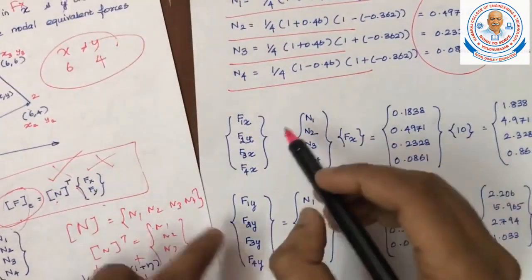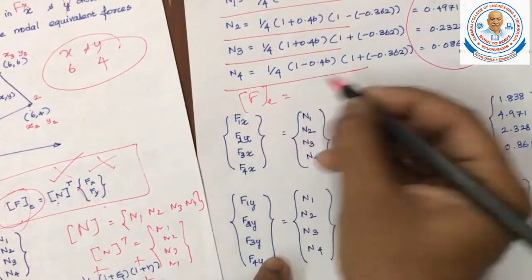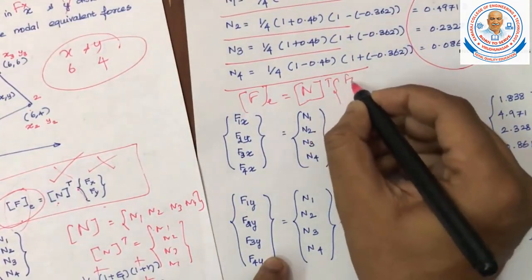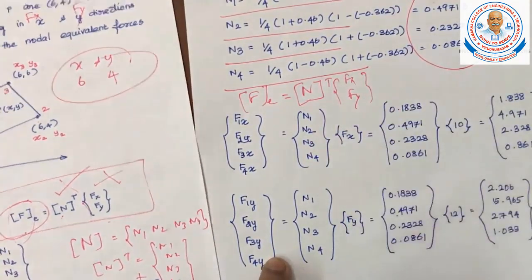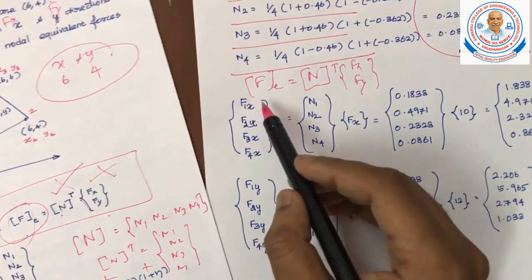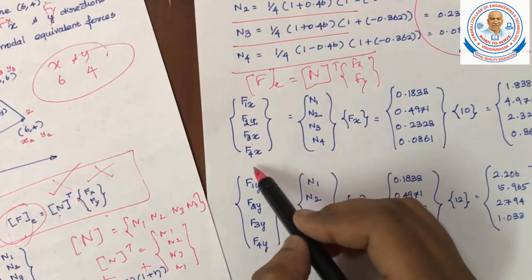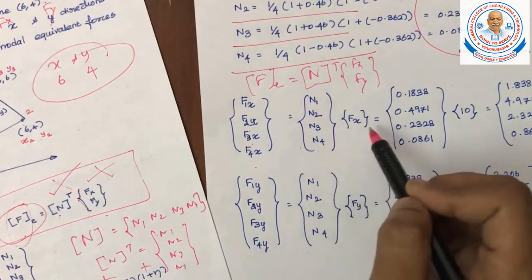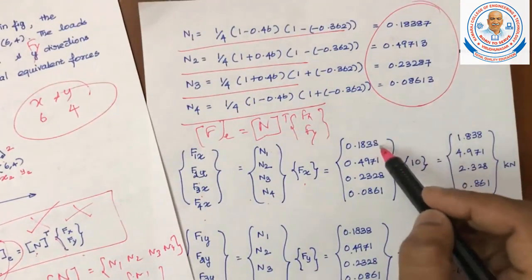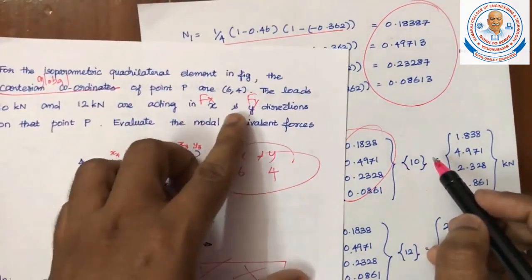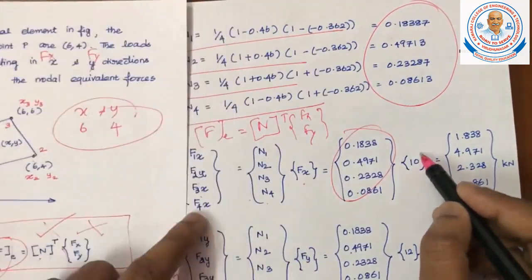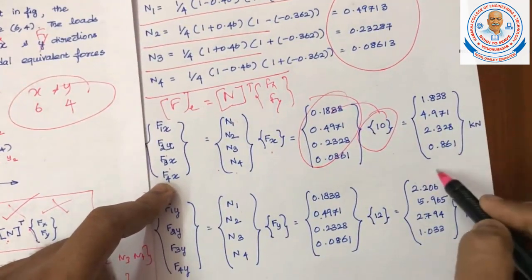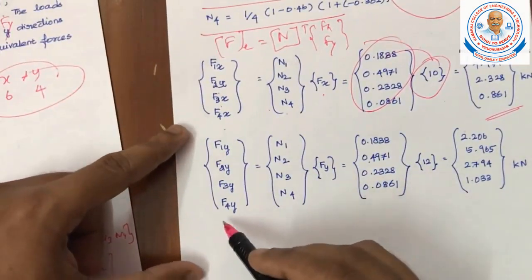Element force vector formula is already shown: f equal to N transpose into f of x and f of y. If we have to calculate the force vector in terms of x, that is f1x, f2x, f3x, f4x. N transpose, N1, N2, N3, N4, here you will get fx. N matrix already N1 to N4, which is multiplied by 10 kilonewton, that is given in the problem. Here you will get the value of force vectors in terms of x.